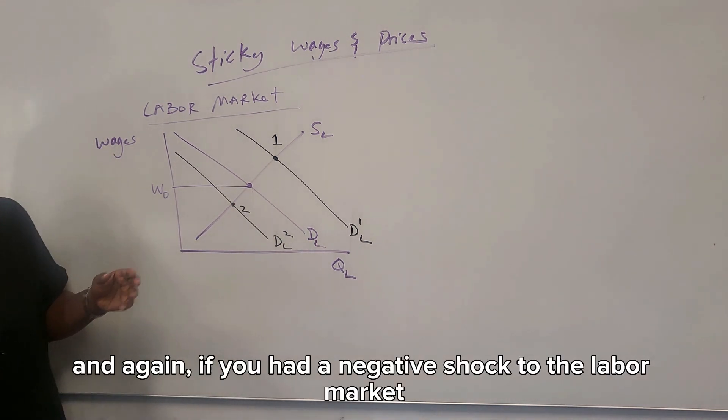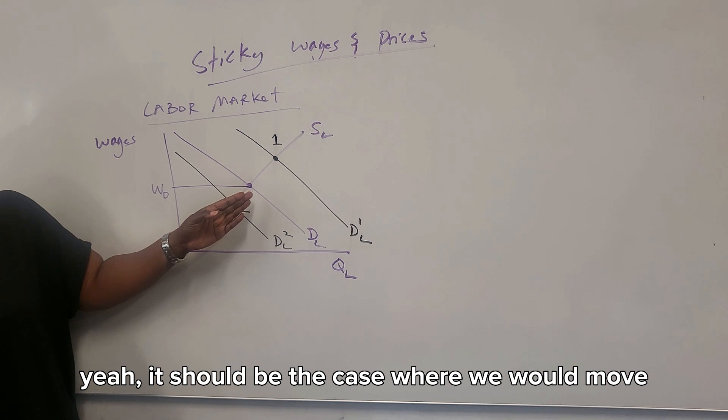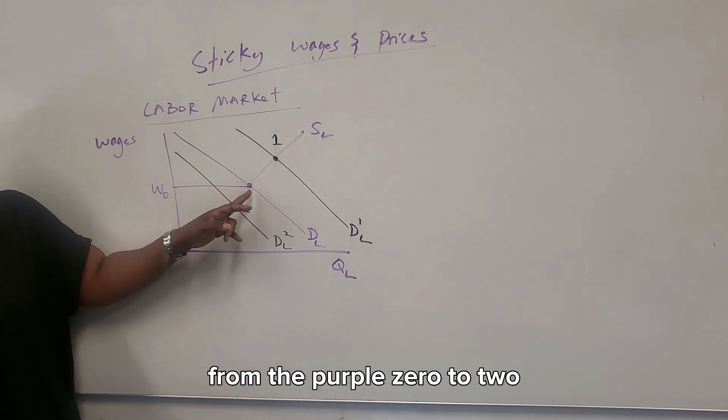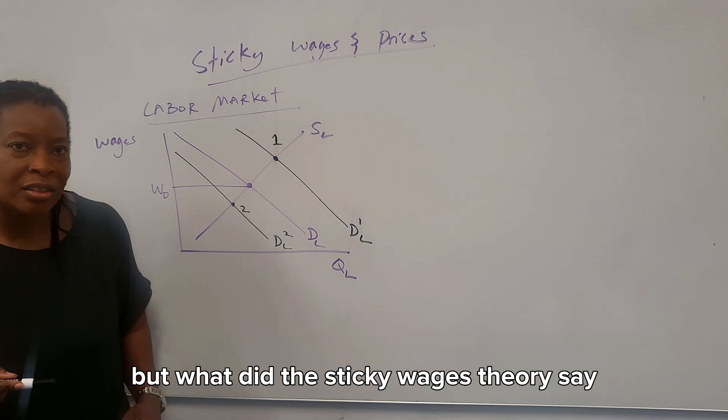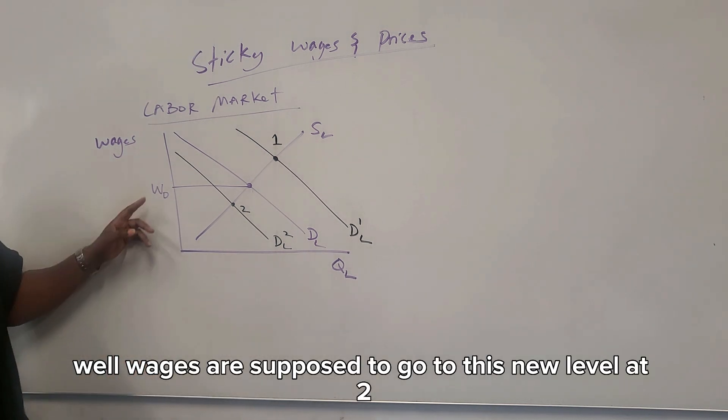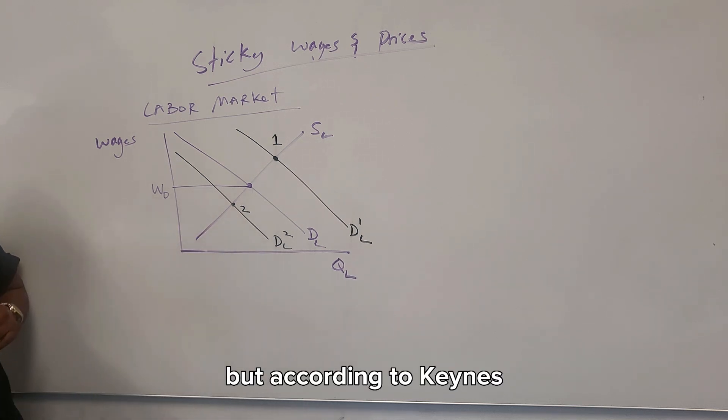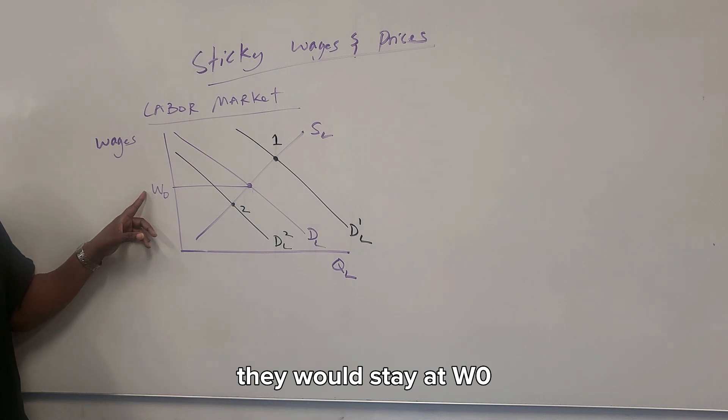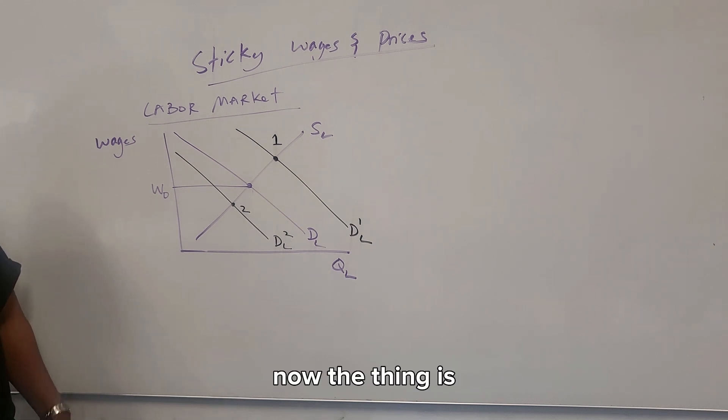And again, if you had a negative shock to the labor market, it should be the case where we would move from the W0 to W2. But what did the sticky wages theory say? Well, wages are supposed to go to this new level at two. But according to Keynes, wages were sticky. They would stay at W0, even though technically they were supposed to go to the new equilibrium.